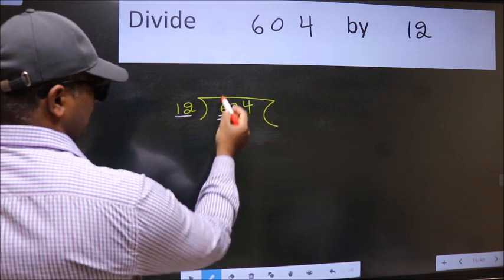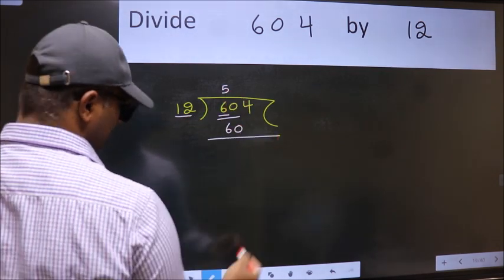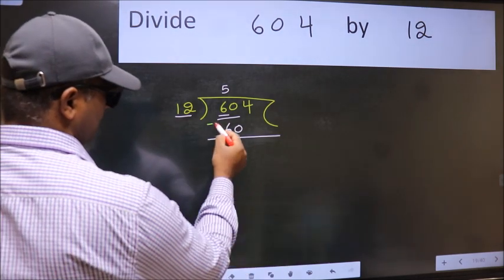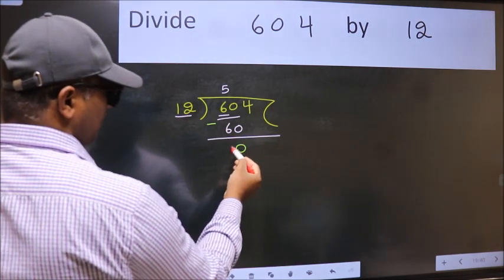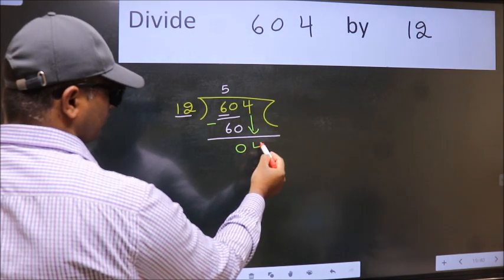When do we get 60 in 12 table? 12 fives 60. Now we should subtract. We get 0. After this, bring down the beside number. So 4 down.